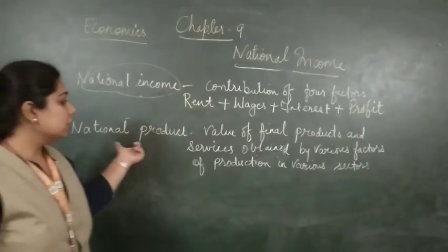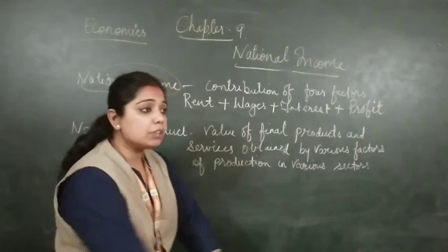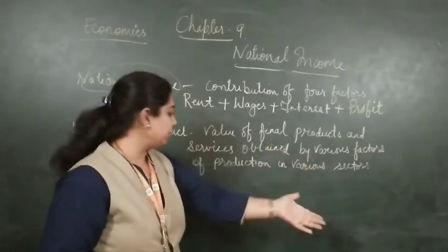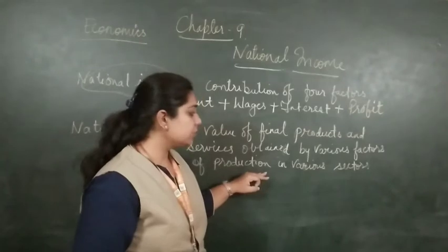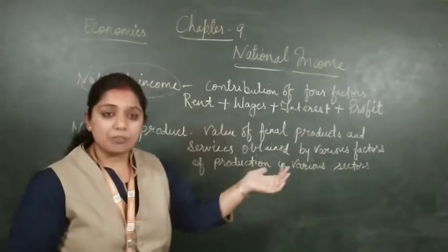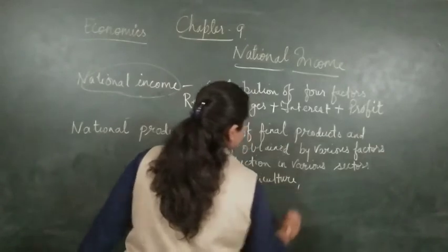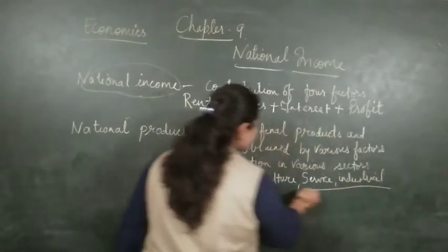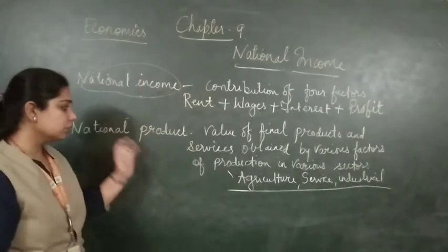National product is the sum of the total production value of final products and services obtained from various sectors. The value of the final goods and services obtained from different factors of production in various sectors — the three sectors being agriculture, services, and industrial sector — the value of products and services from these three sectors is called the national product.